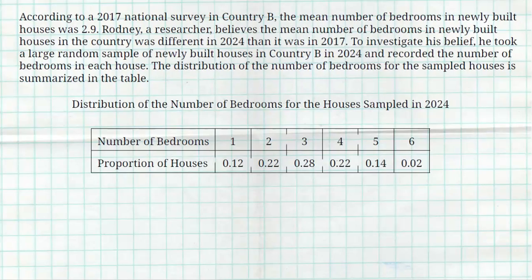According to a 2017 survey in Country B, the mean number of bedrooms in a newly built house was 2.9. Rodney, a researcher, believes that the mean number of bedrooms in newly built houses was different in 2024 than it was in 2017. To investigate his belief, he looked at a large random sample of newly built houses in Country B in 2024 and recorded the number of bedrooms in each house. The distribution can be seen in the table.